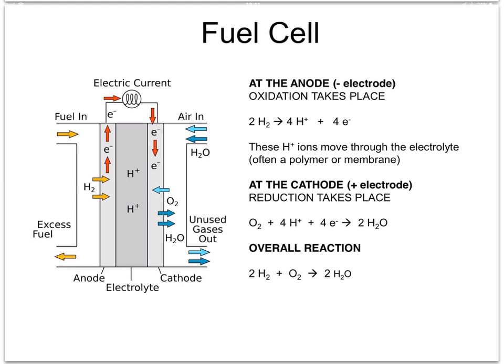Here's a diagram of the fuel cell. You can see that there are two electrodes — a cathode and an anode — which are made of platinum.